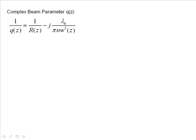We have our complex beam parameter q, and if we know the radius of curvature and we know the beam waist and the wavelength, we can calculate what q is with a real part and an imaginary part, as shown right here.